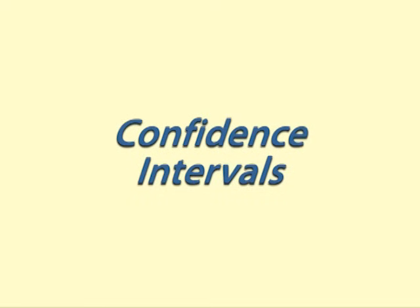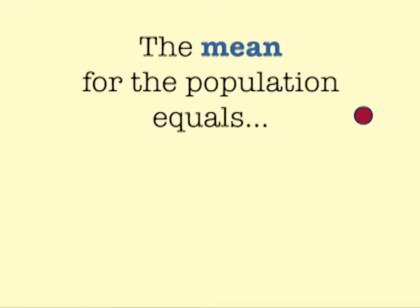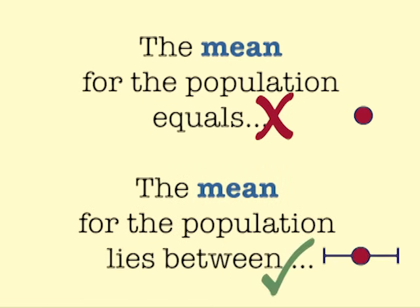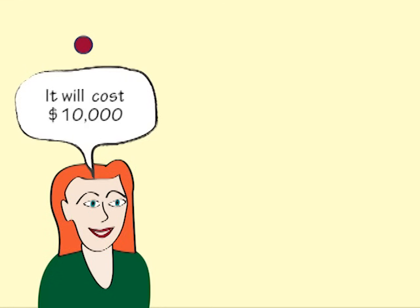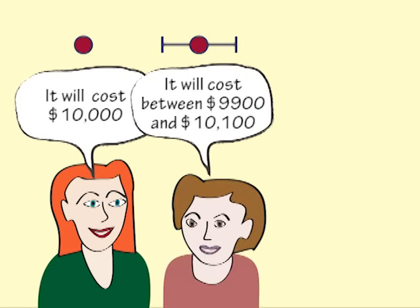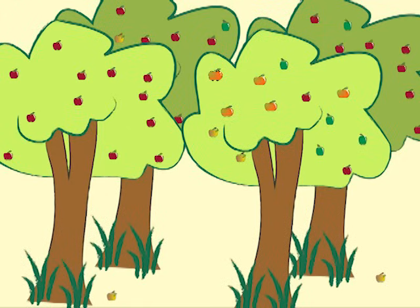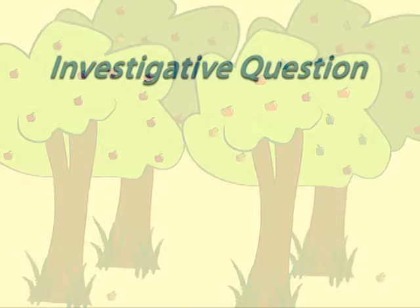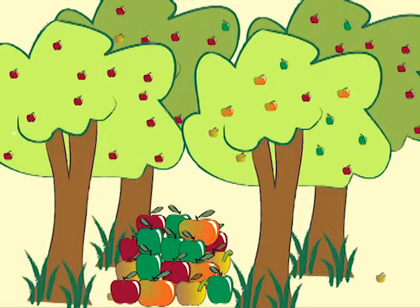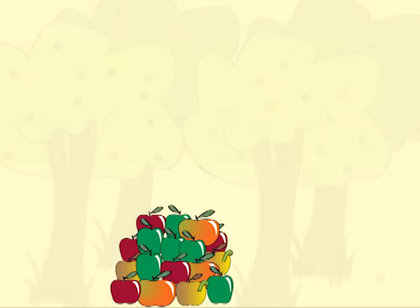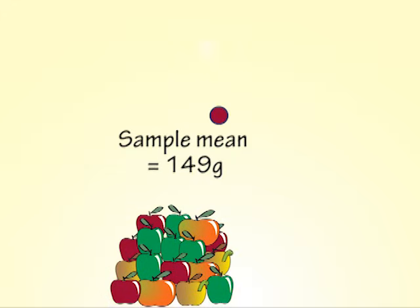Confidence Intervals. When we express an estimate of a population parameter, it is good practice to give it as a confidence interval. A confidence interval communicates how accurate our estimate is likely to be. Say we wish to find out how big the apples are in our orchard. We put this as an investigative question: what is the mean weight of all the apples in the orchard? We take a sample and calculate the sample mean. This is the best estimate of the population mean.